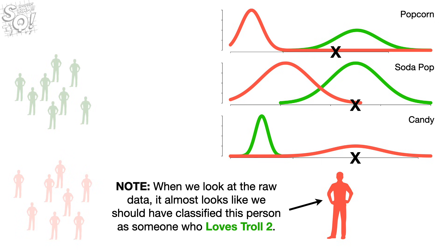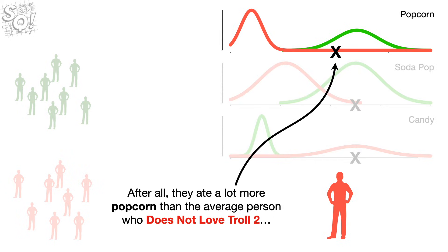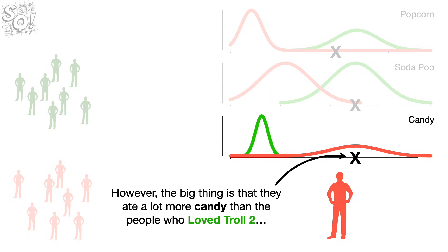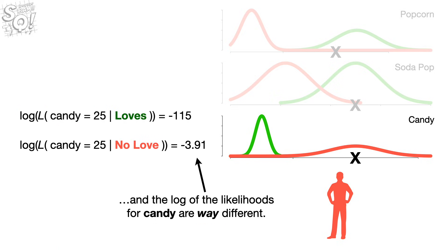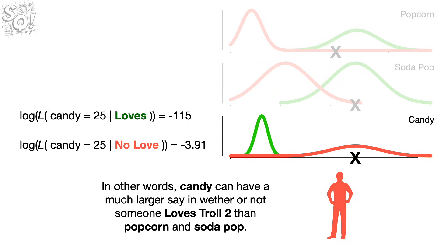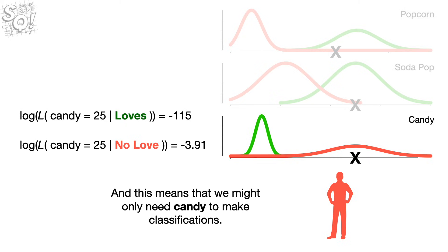Note, when we look at the raw data, it almost looks like we should have classified this person as someone who loves Troll 2. After all, they ate a lot more popcorn than the average person who doesn't love Troll 2, and they drank as much soda as the average person who loves Troll 2. However, the big thing is that they ate a lot more candy than the people who loved Troll 2. And the log of the likelihoods for candy are way different. And this difference is what made us classify the new person as someone who does not love Troll 2. In other words, candy can have a much larger say in whether or not someone loves Troll 2 than popcorn and soda pop. And this means we might only need candy to make classifications.